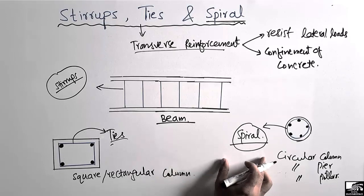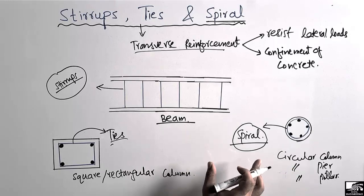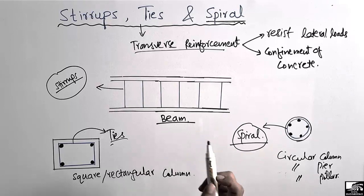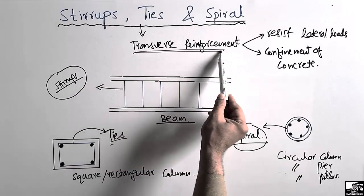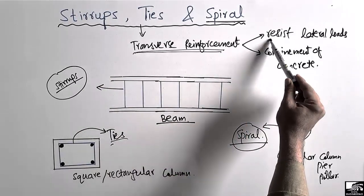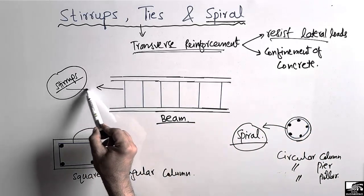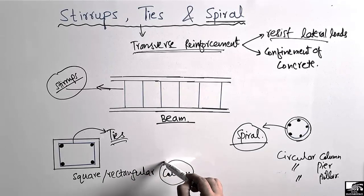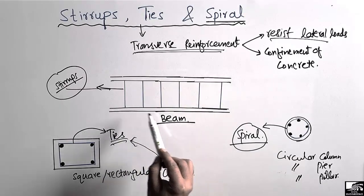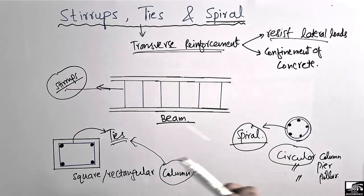These are just technical terms used to differentiate between their uses. Otherwise, the purpose of all three — resistance to lateral loads and confinement of concrete — is the same. To summarize: stirrups are used for beams, ties are used for square or rectangular columns, and spirals are always used in circular columns, pillars, or piers.